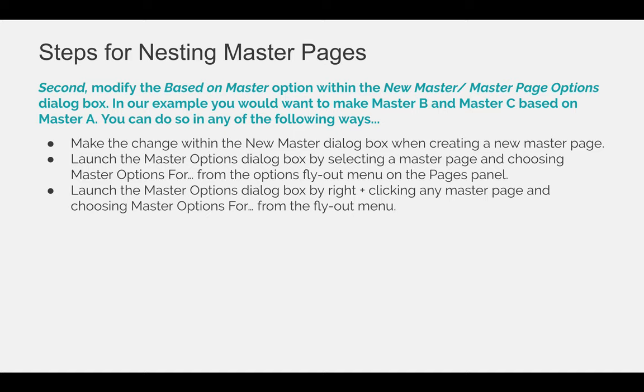The second step to create a nested Master Page is to modify the Based on Master option within the new Master Page or the Master Page Options dialog box. In our example, you would want to make Master B and Master C based on Master A so that everything from Master A automatically flows onto those Master Pages. You can create a Based on Master option in a number of ways — choose the one that you like best and give it a try.